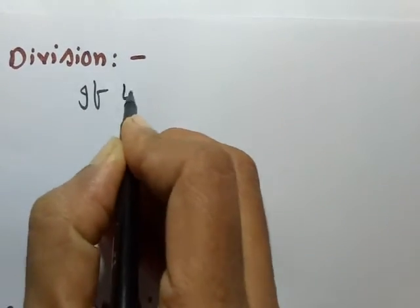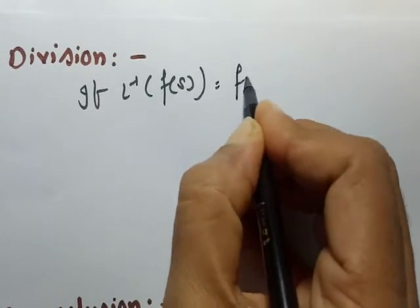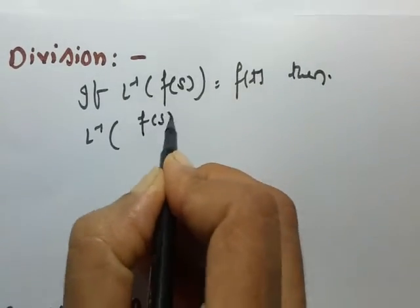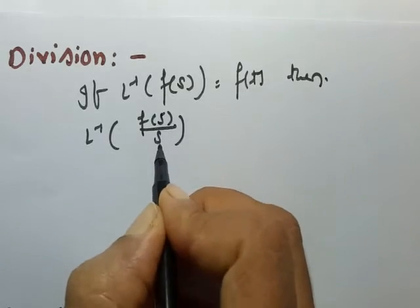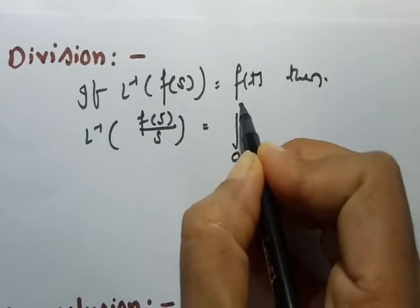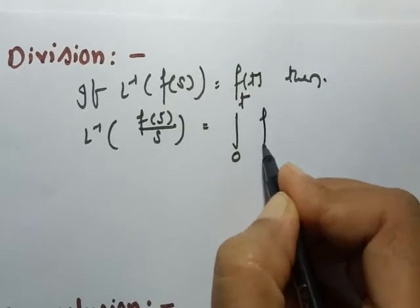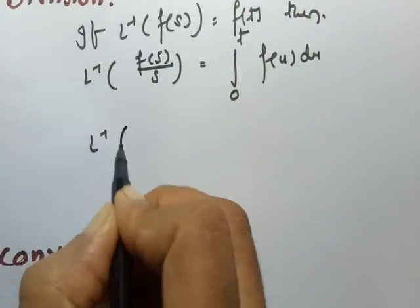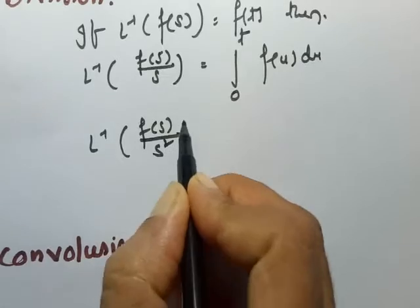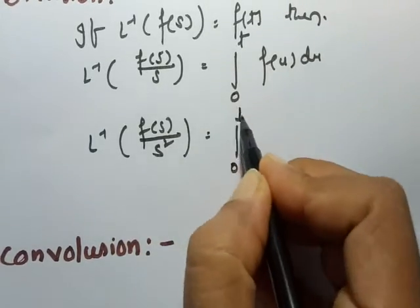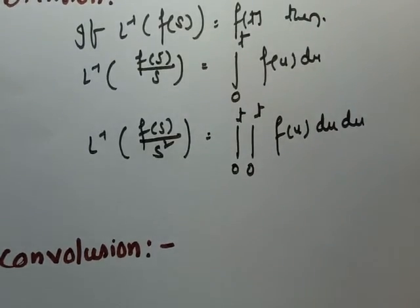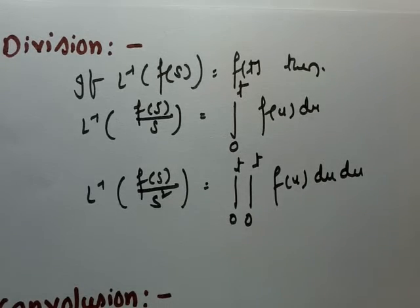When it comes to division: if inverse Laplace transform of F(s) is equal to f(t), then the inverse Laplace transform of F(s)/s — if F(s) is divided by s one time — we have to integrate between the limits 0 to t of f(u) du. If F(s) is divided by s² for two times, then you have to integrate two times: the double integral of f(u) du. This is the formula related to division in inverse Laplace transform.